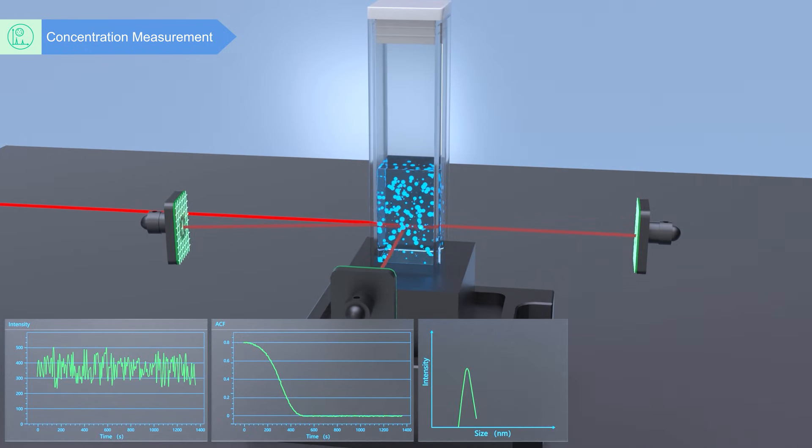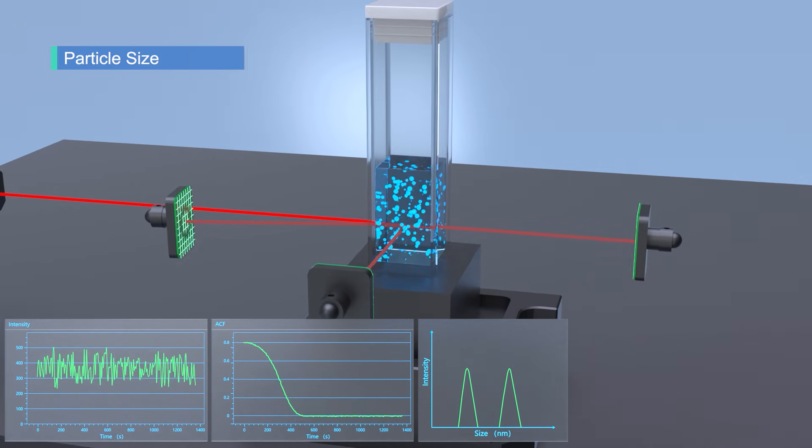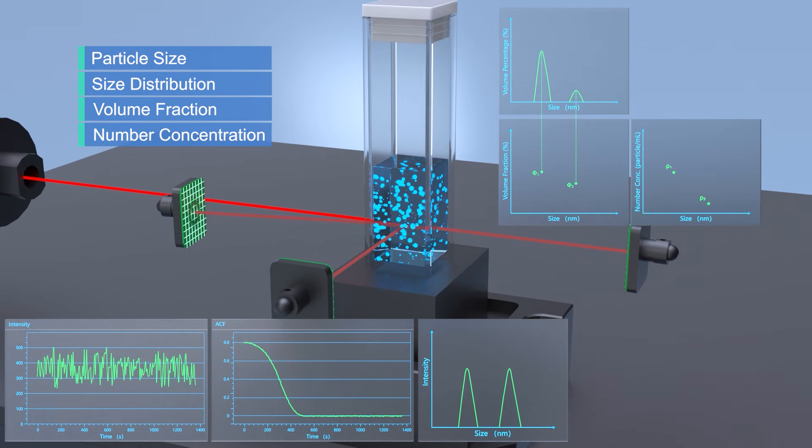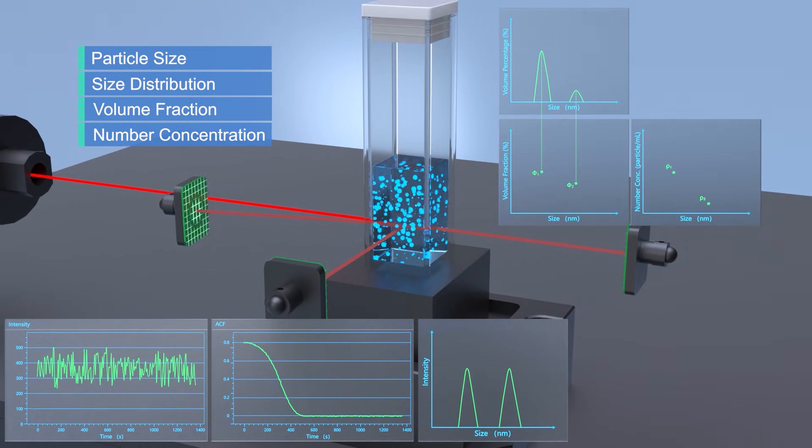Bnano can simultaneously obtain information of the particle size, size distribution, volume fraction of the system and number concentration during a single detection process.